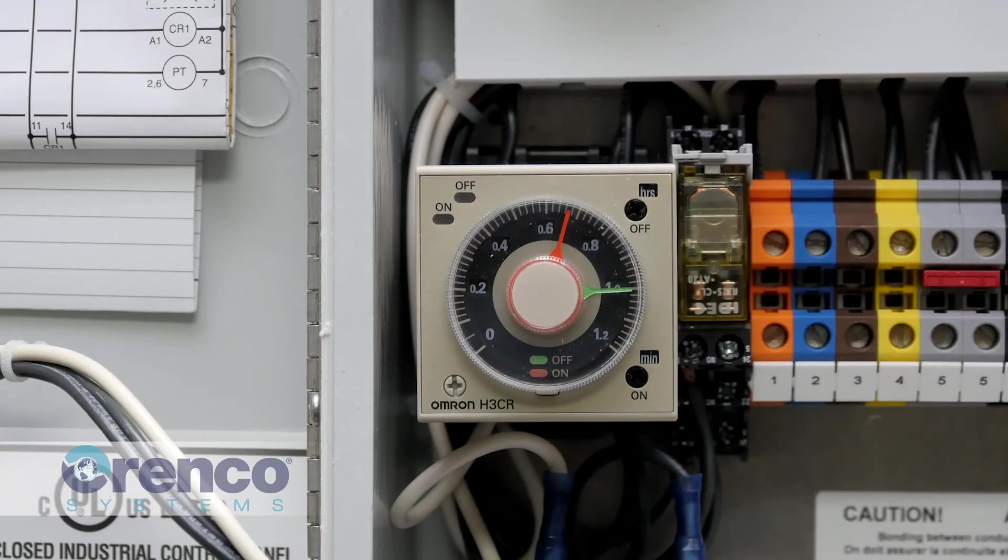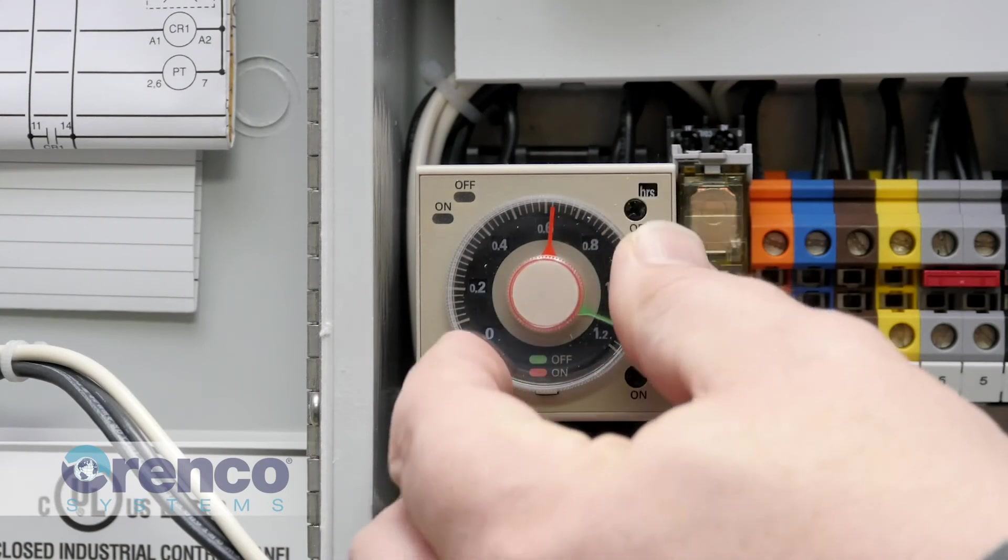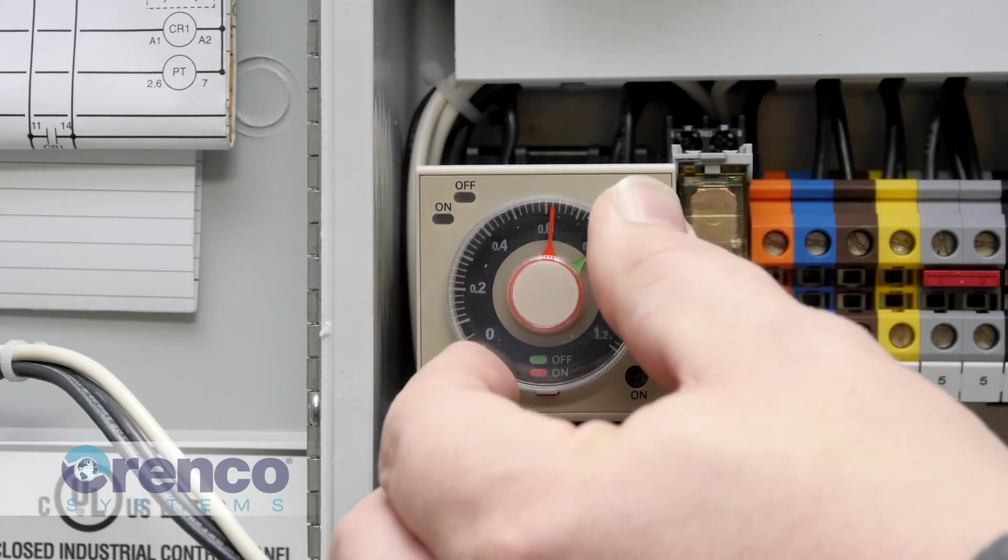Turning each of these will move the associated indicator within the extremes of the range on the dial, allowing you to precisely set the time for each cycle.